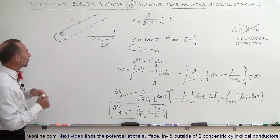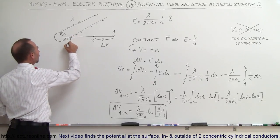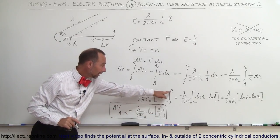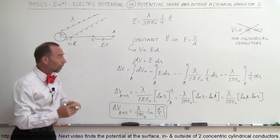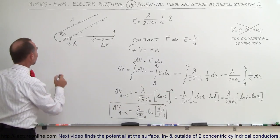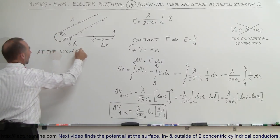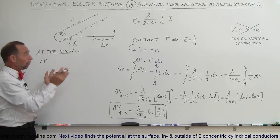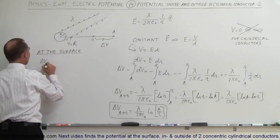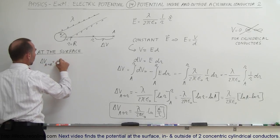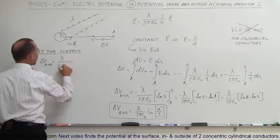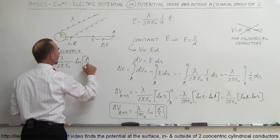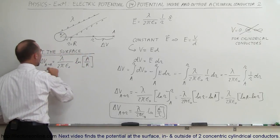What would it be on the surface? If we want to find the potential right at the surface where r equals the radius of the cylinder, all we have to do is replace little r with big R. So instead of the variable r, we simply put the radius of the cylinder. At the surface, the change in potential relative to reference point A is equal to lambda divided by 2π ε₀ times the natural log of the ratio of A divided by the radius of the cylinder.